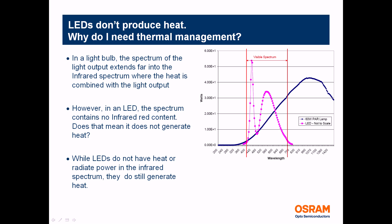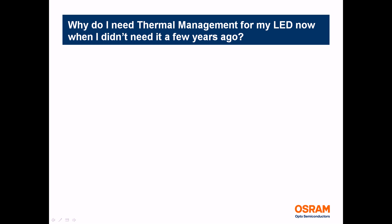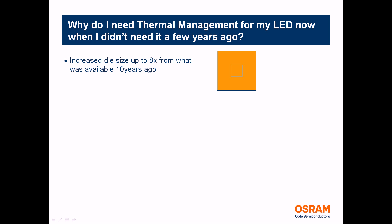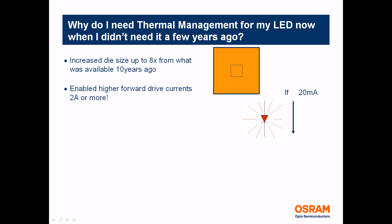Why do you need a thermal management system now when you didn't a few years ago? Several changes have occurred in the LED industry. The semiconductor die size has increased by at least eight times, going from 250 microns up to 2 millimeter square area. This enables higher forward current through the LED, going from 50 milliamps or even 20 milliamps all the way up to 2 amps or more.